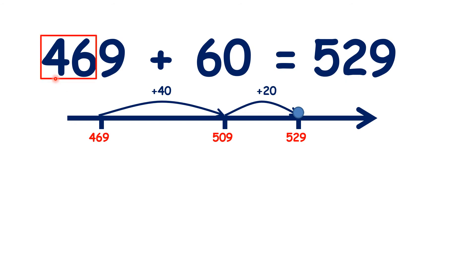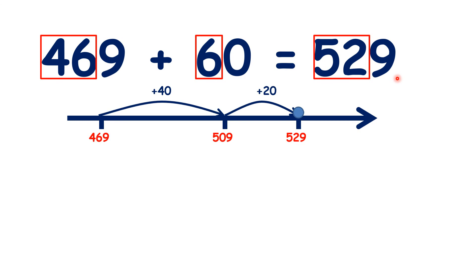So we started with 400s and 6 tens, which we can think of as being 46 tens. We added 6 tens, and then in our answer we got 500s and 2 tens, which we can think of as being 52 tens. So if you know that 46 plus 6 is 52, you know that 469 plus 60 is 529. Because we're only adding tens, the 9 in our units stays the same.